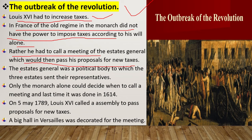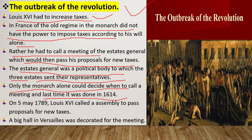The Estates General was the political body to which the three estates — the first, second, and third — sent their representatives. Only the monarch alone could decide when to call a meeting, and the last time it had been done was in 1614. So on 5th May 1789, Louis XVI called an assembly to pass the proposal for new taxes.